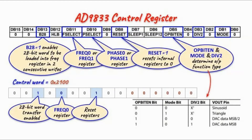The control register of the AD9833 is a 16-bit register. The B28 bit, when set, enables the 28-bit word to be loaded into the frequency register in two consecutive writes.